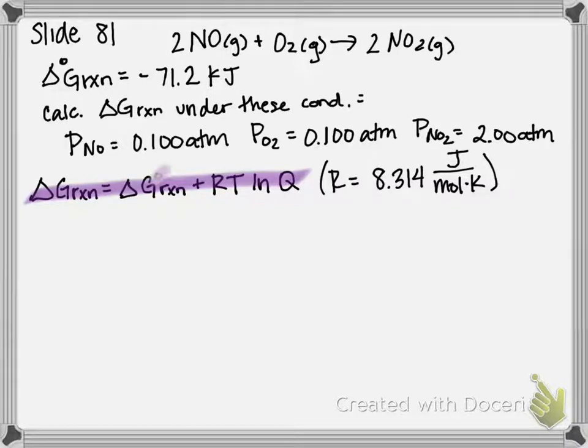Our temperature is going to need to be in Kelvin, and then Q, which is basically the constant of our reaction when it's not at equilibrium. So that means we're going to need to write an equilibrium expression for this and figure out what Q is in order to plug it into this equation.